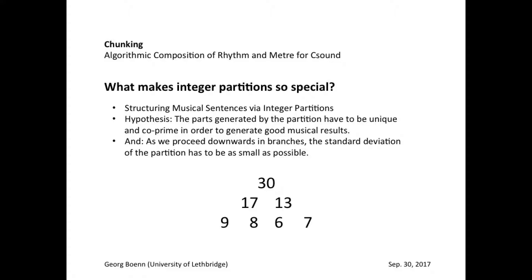Two numbers are regarded to be co-prime if they don't share any of their divisors. For example, 2 and 3 are co-prime, as well as 7 and 12. We found that this feature has a direct influence on the musical result because of the level of impulse that can be generated. It also seemed beneficial that the numbers should not be too far away from each other; therefore, we went for the smallest standard deviation within a partition.